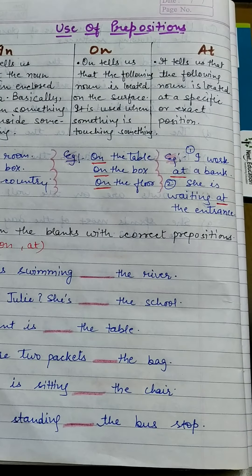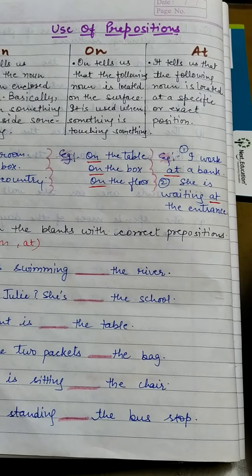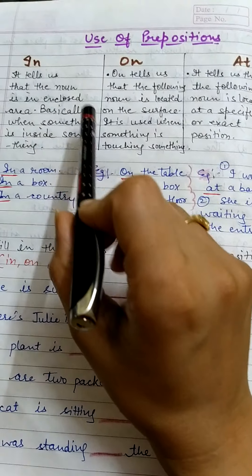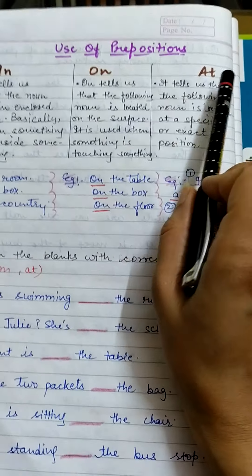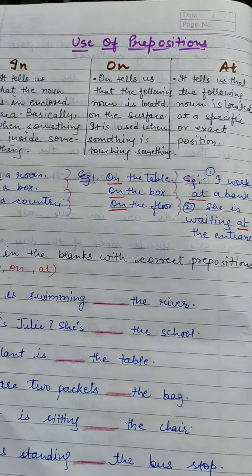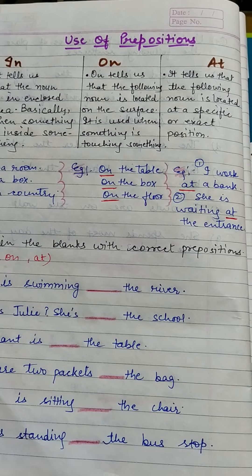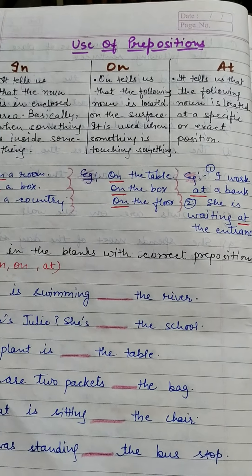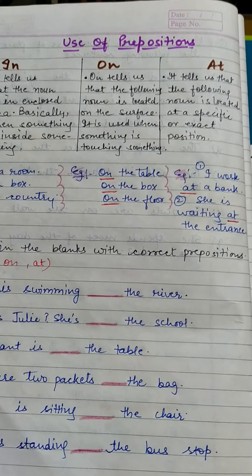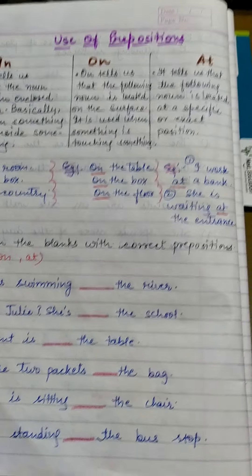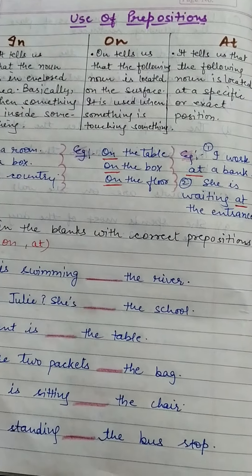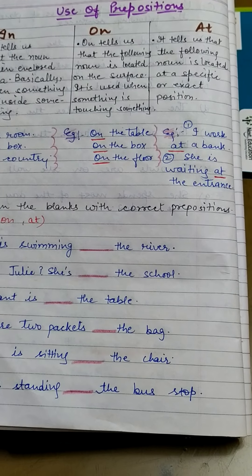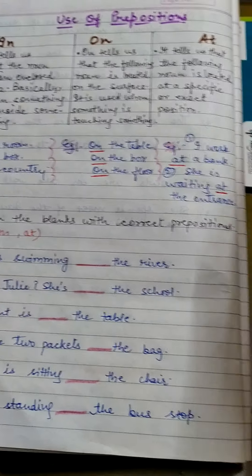You might say, ma'am, in the previous class we also read about use of prepositions. Yes, but here in this class we are going to read extensively about 'in,' 'on,' and 'at.' We will read about these three prepositions in detail because they are very important prepositions used in our English language — used as prepositions of time, but also in a different way. So it is very important for all of us to understand the meaning of these prepositions as prepositions of place.